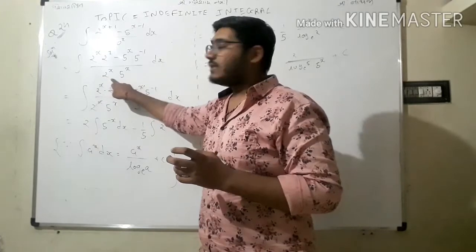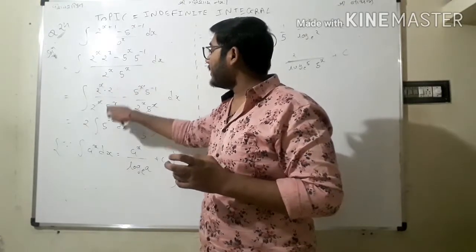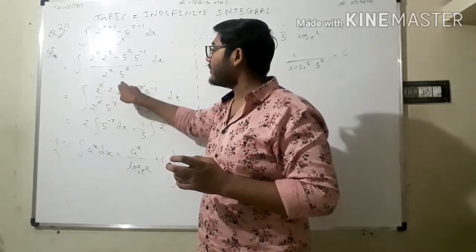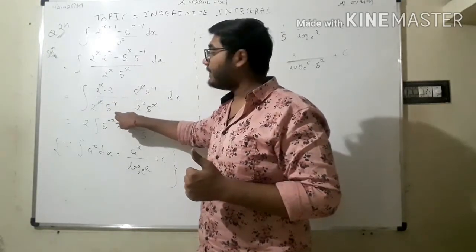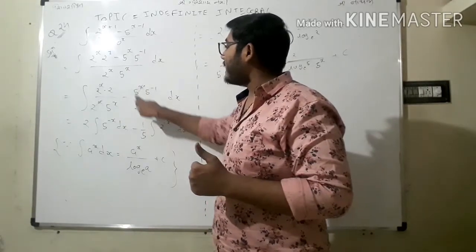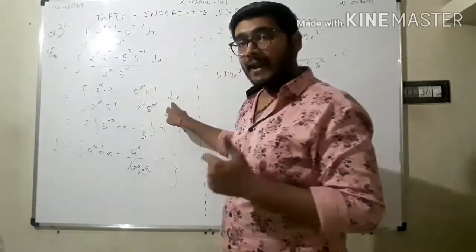10 raised to x so I 2 raised to x, 5 raised to x, dx as it is. Split out this about term into separate. So 2 raised to x, 2 raised to 1 upon 2 raised to x, 5 raised to x. 5 raised to minus 1 upon 2 raised to x, 5 raised to x dx done.